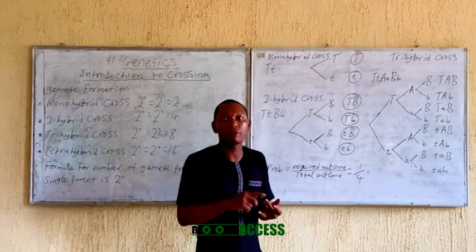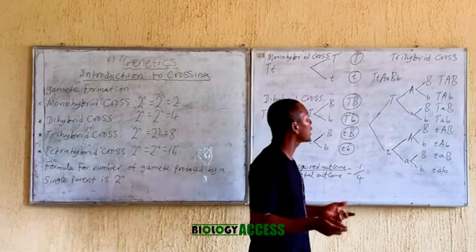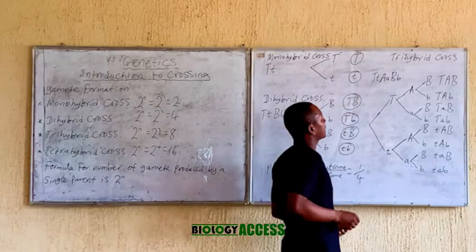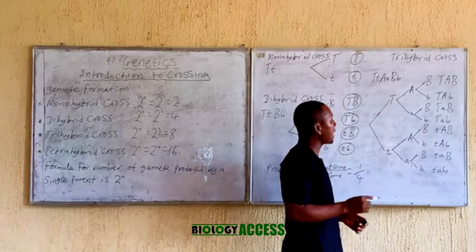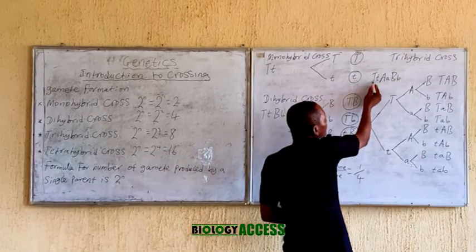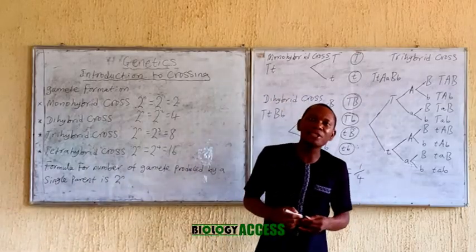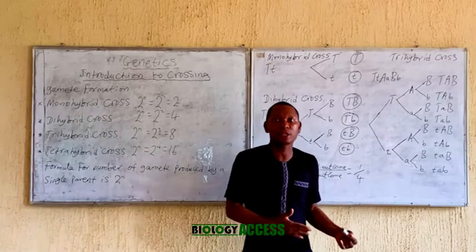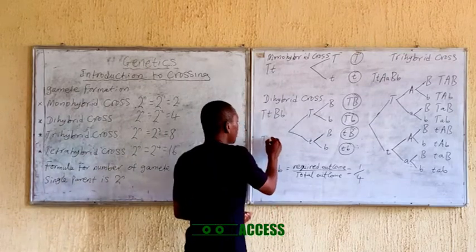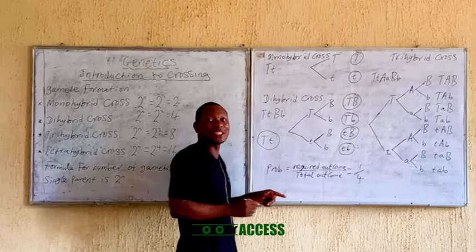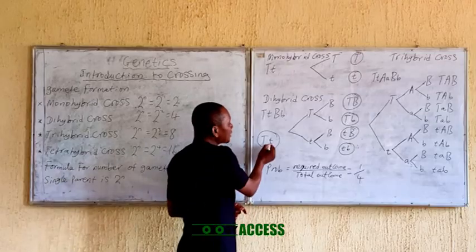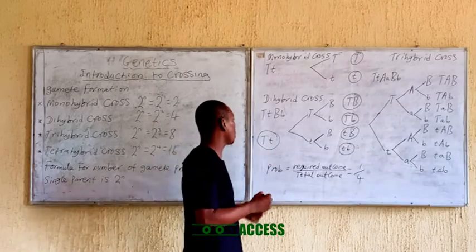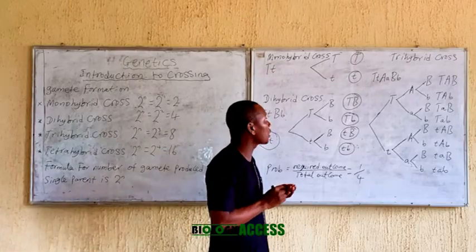For monohybrid cross, it is a cross that involves one character. For dihybrid, two. For trihybrid, three. This is trihybrid cross. Let's assume this gene pair is for height, this is for color, and this is for size. In height, this allele is dominant. Dominant means a character that is expressed in the presence of another one that is suppressed, while recessive means a character that is suppressed in the presence of another one that is expressed. So if this organism is a pea plant obeying Mendel's law, this organism will actually be tall — the dominant allele suppresses the short gene.